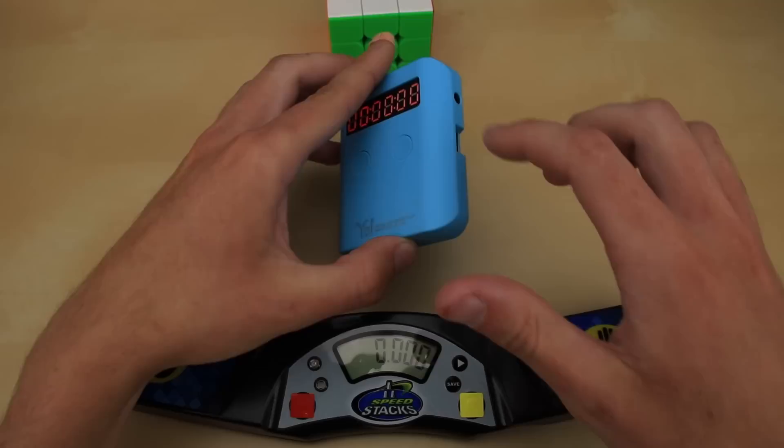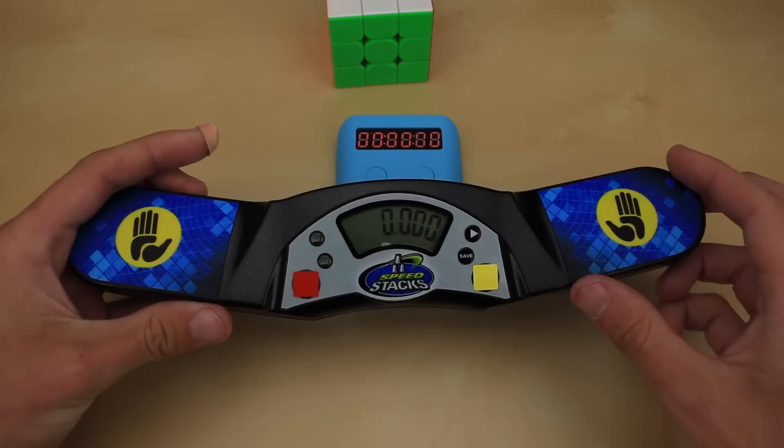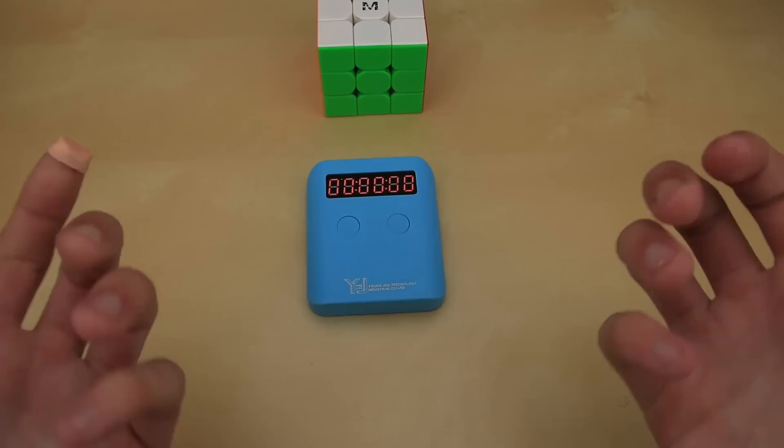It also has this little port on the side just like a stack mat has on the bottom, which on a stack mat allows you to plug in a big competition timer display or just plug it into a computer to record your solves. I imagine it works the same way on this one.